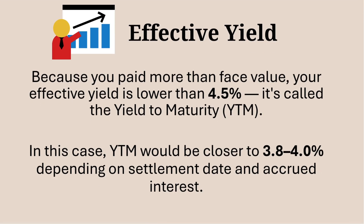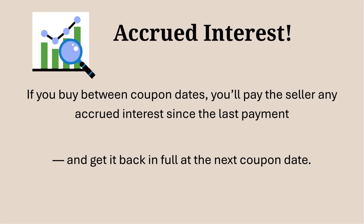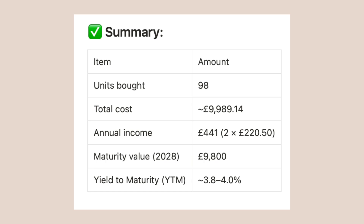To calculate the effective yield: because you paid more than the face value, your effective yield is lower than 4.5%. This is called the yield to maturity. In this case, the yield to maturity would be closer to 3.8 to 4%, depending on the settlement date and accrued interest. Accrued interest is an important factor when buying bonds on the secondary market — if you buy between coupon dates, you'll pay the seller any accrued interest since the last payment, and you'll get it back in full on the next coupon date.